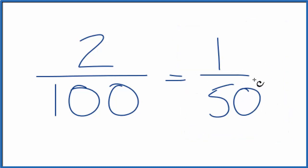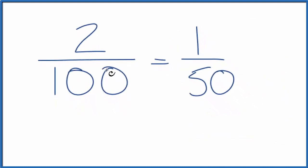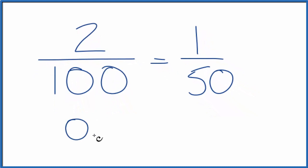You can check your work with a calculator. 2 divided by 100 equals 0.02. 1 divided by 50 equals 0.02.